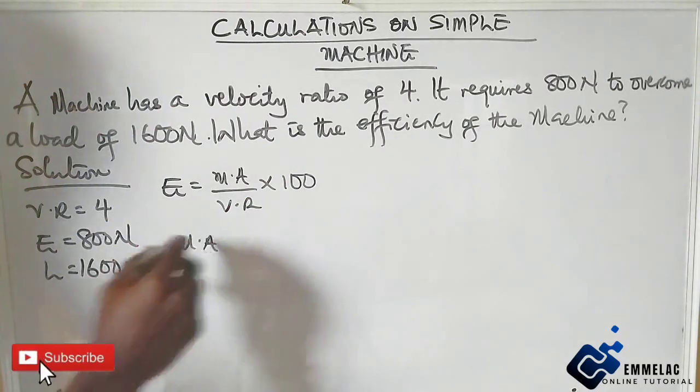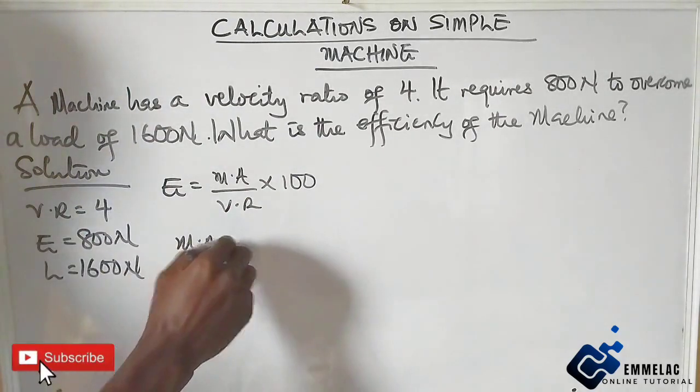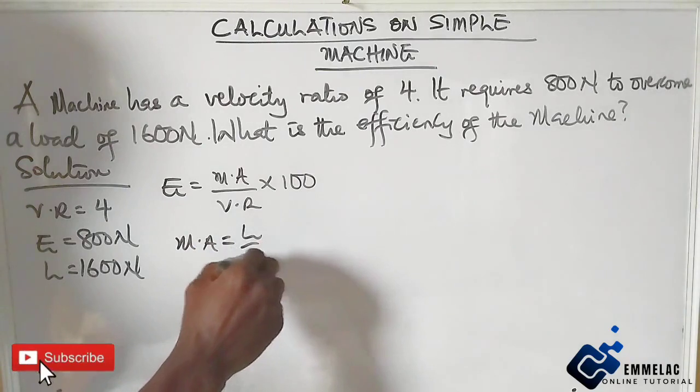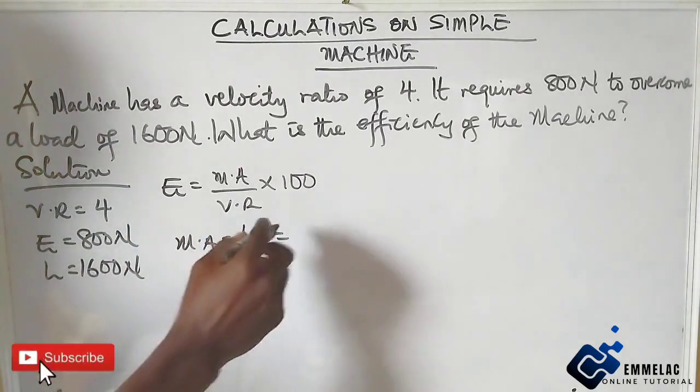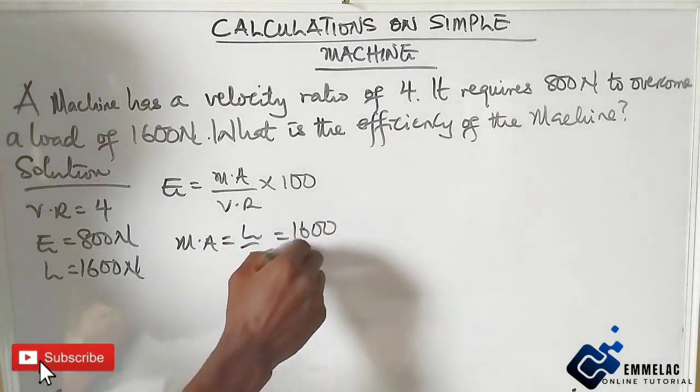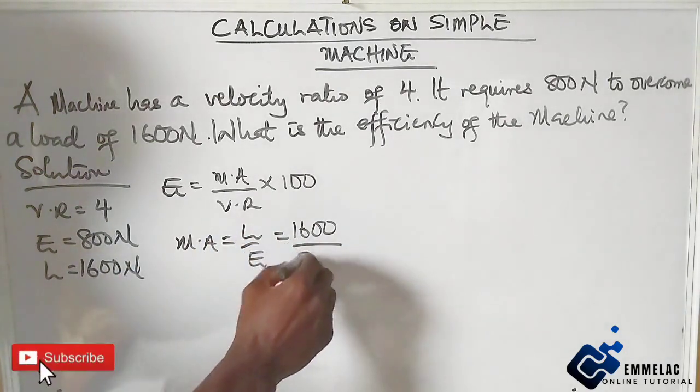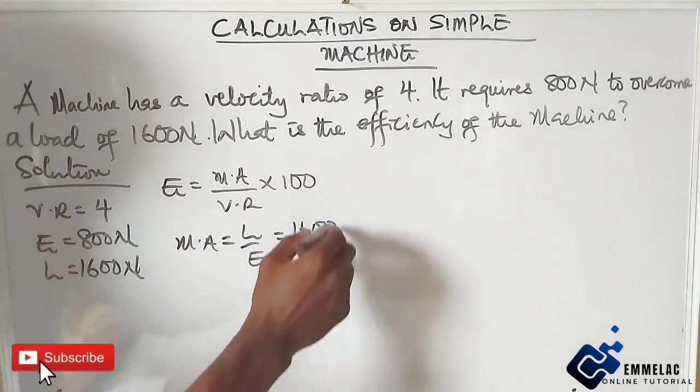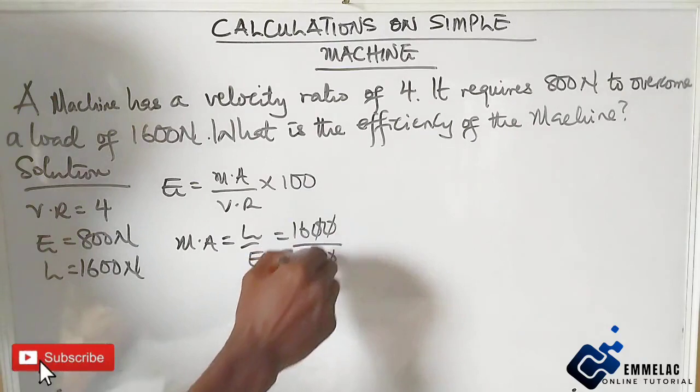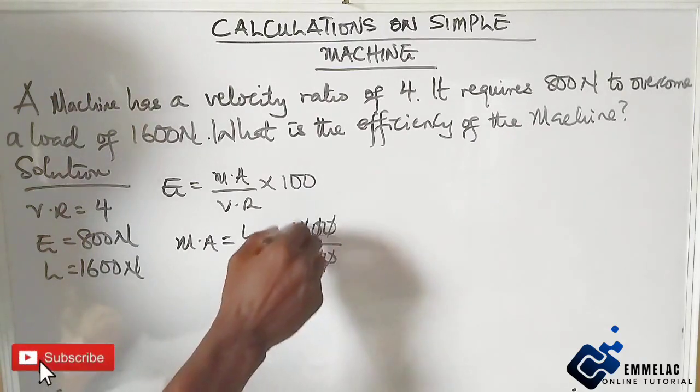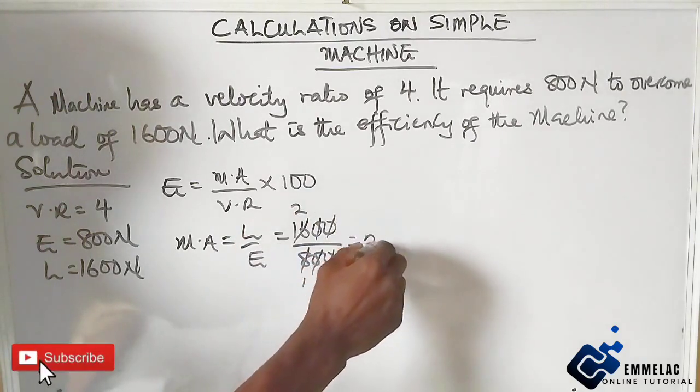Our load here is 1600 Newton over 800 Newton. So zero cancels zero, 8 here becomes 1, 8 here becomes 2. So our mechanical advantage is 2.